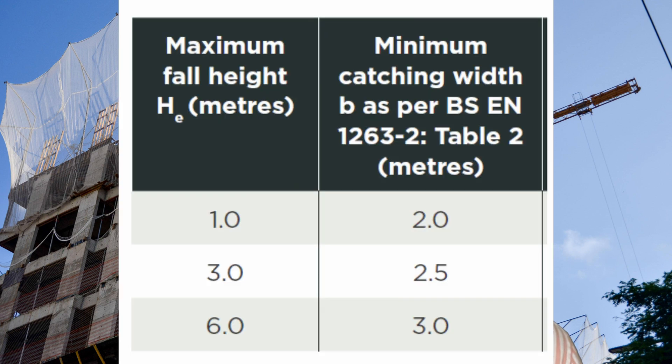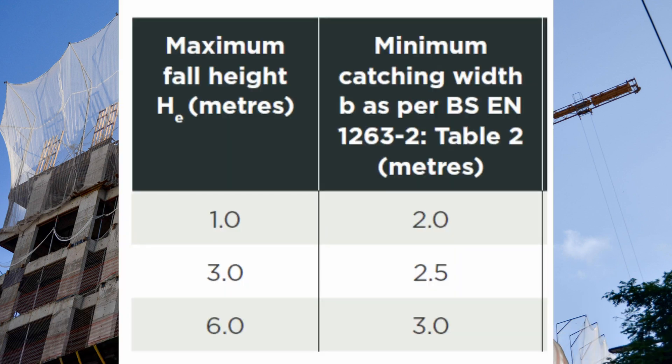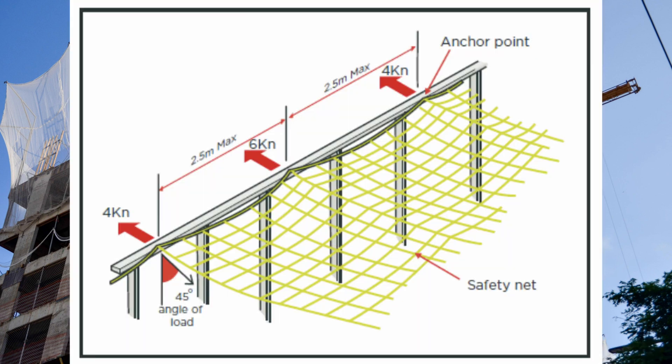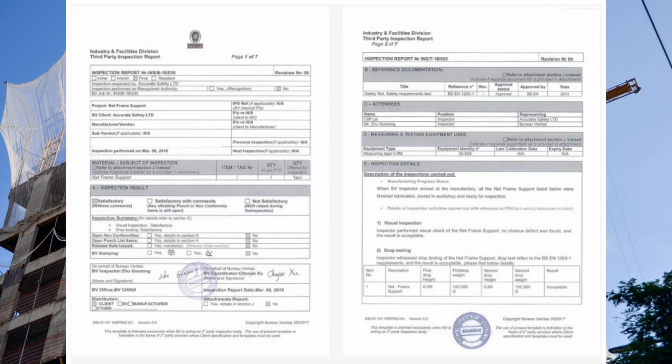Per BS EN 1263 Part 2: if maximum fall height is 1 meter, catching width must be 2 meters; if maximum fall height is 3 meters, catching width must be 2.5 meters; if maximum fall height is 6 meters, catching width must be 3 meters. The maximum distance between anchor points must be 2.5 meters. The strength of the anchoring point is 6 kilo-Newtons. The MTC (material test certificate) for safety nets is required as per EN 1263.